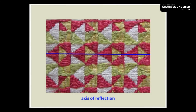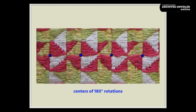There are no vertical reflections, but there is a reflectional symmetry with a horizontal axis passing to the vertex of the isosceles triangles whose bases are vertical. In addition, the points at which pairs of isosceles red triangles intersect at the respective vertices are centers of 180-degree rotations.